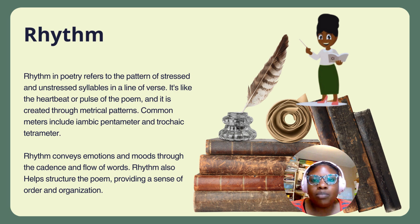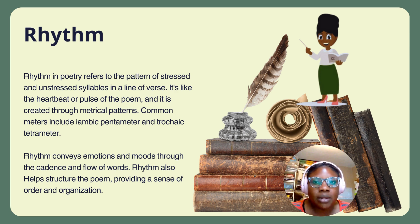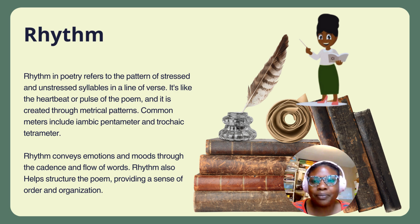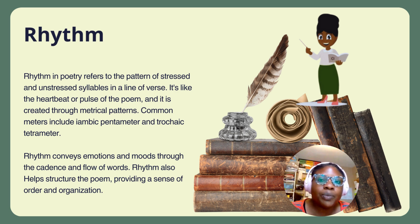Rhythm in poetry refers to the pattern of stressed and unstressed syllables in a line of verse. It's like the heartbeat or pulse of the poem, and it is created through metrical patterns. Common meters include iambic pentameter and trochaic tetrameter. Rhythm conveys emotions and moods through the cadence and flow of words. Rhythm also helps structure the poem, providing a sense of order and organization.